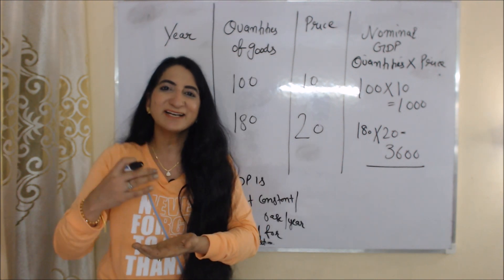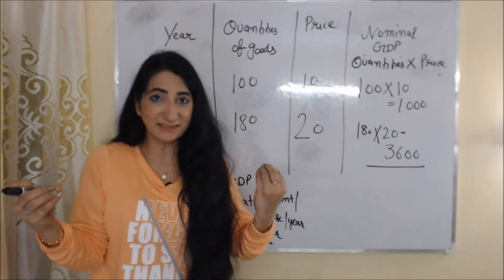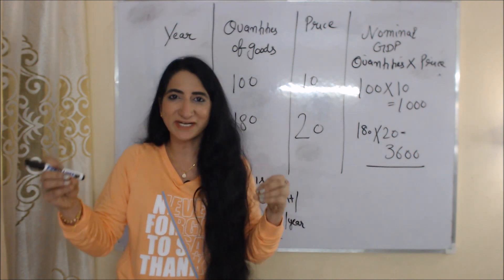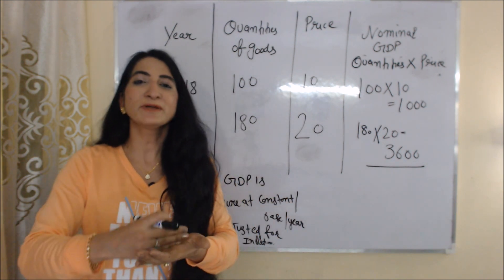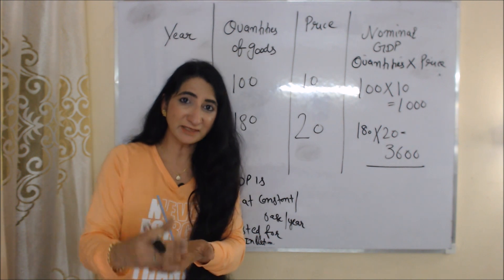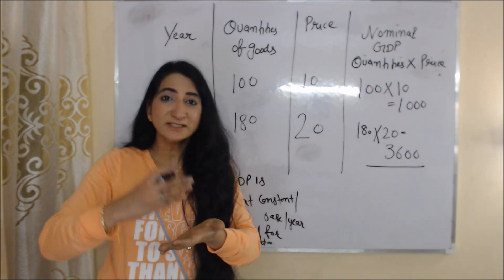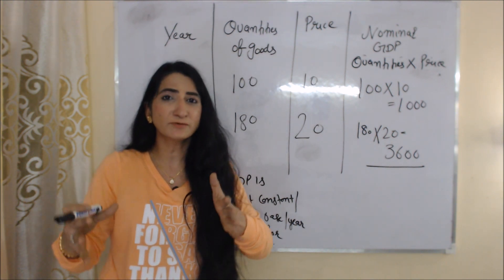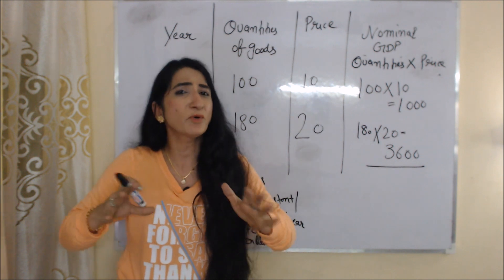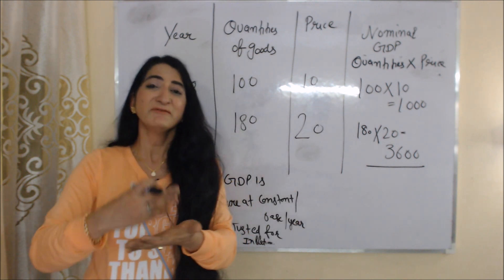Now we are going to talk about real GDP. Real GDP is the GDP that we measure at constant price, or we can say at base year price. This GDP is adjusted for inflation, meaning real GDP does not have any effect of inflation.